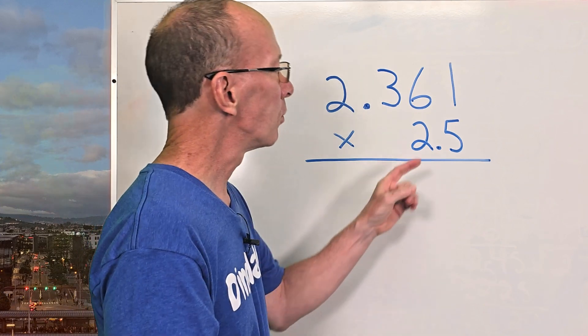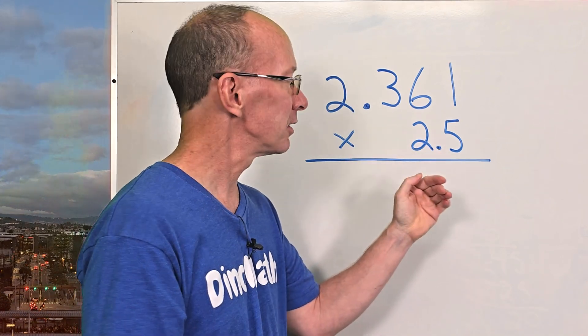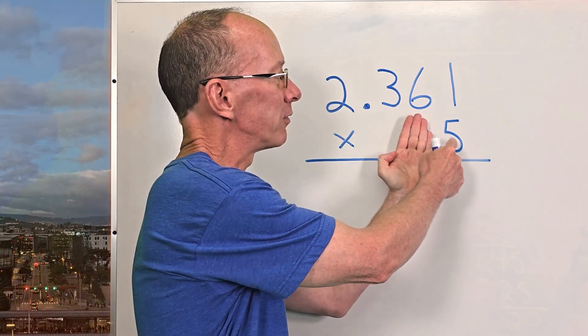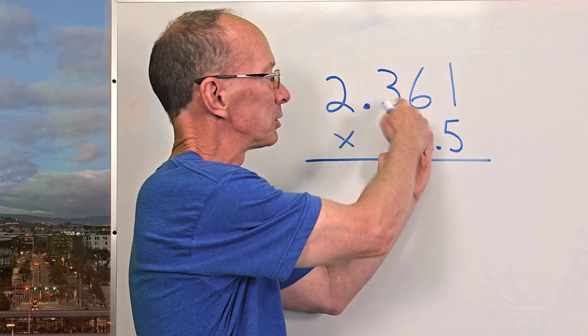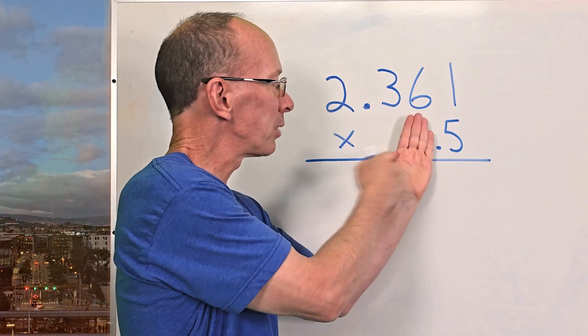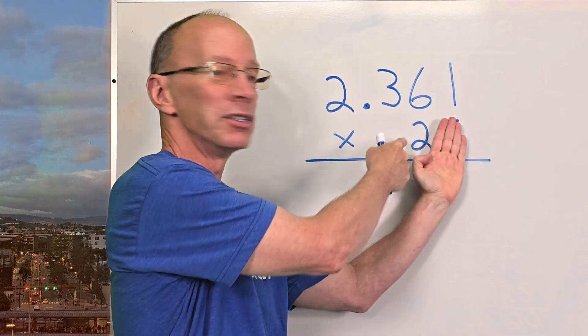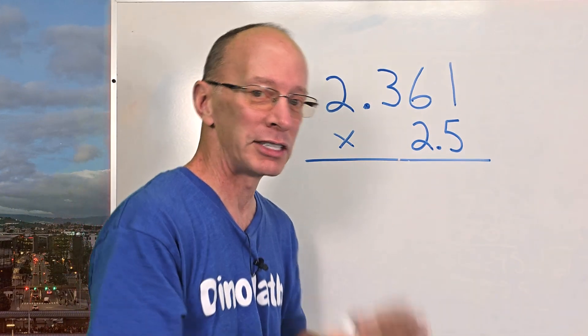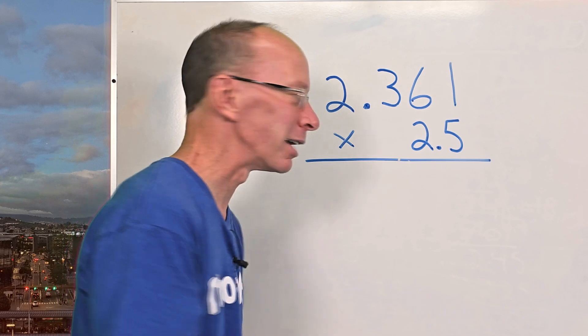All right, so first of all, when we multiply a double digit like this, we're even covering up the two. We're just going to use the five. I'm going to take five times one, five times six, five times three, and five times two. Write the problem here and then I'm going to switch over and do the two. I'm going to make it easy cheesy lemon squeezy for you. Let's take it step by step.